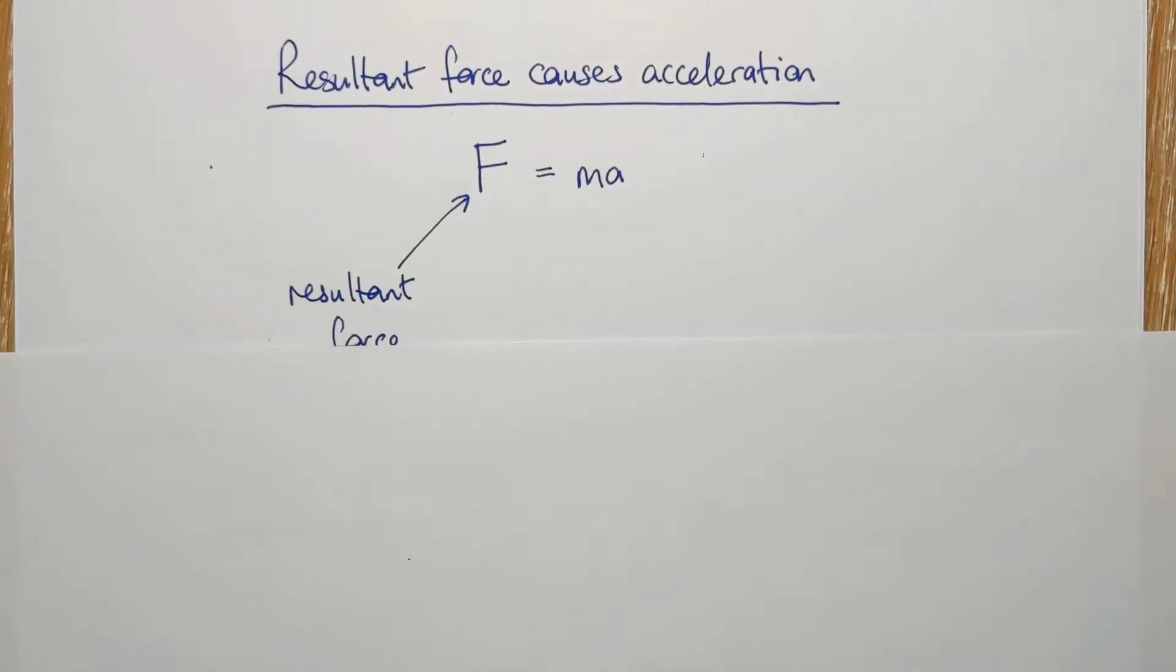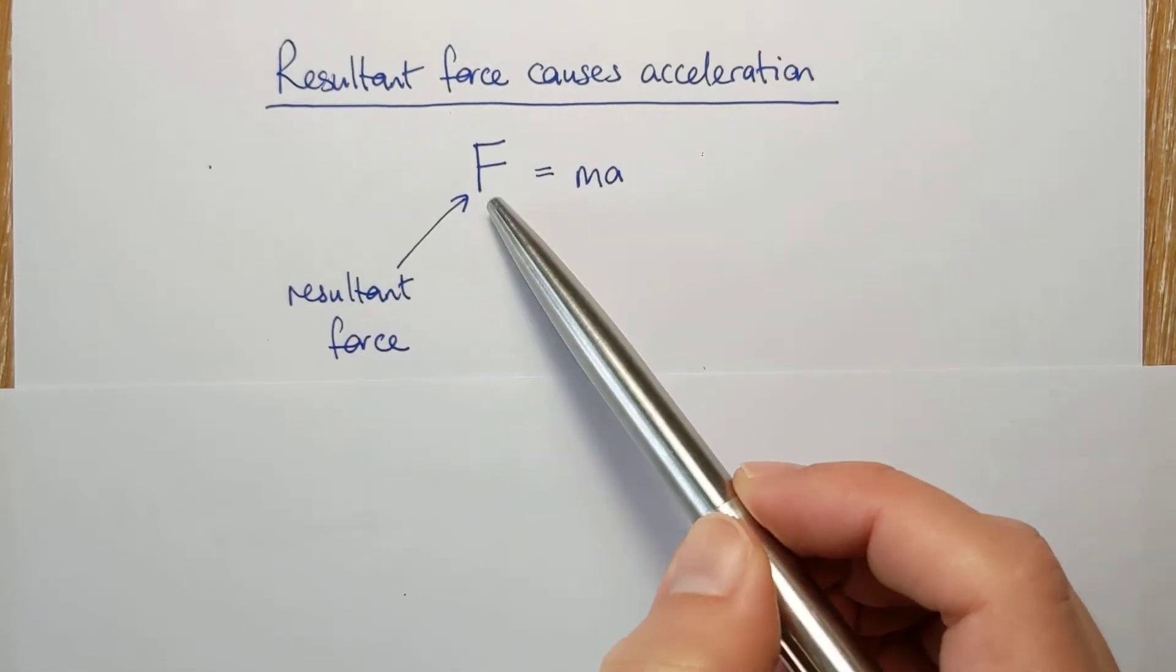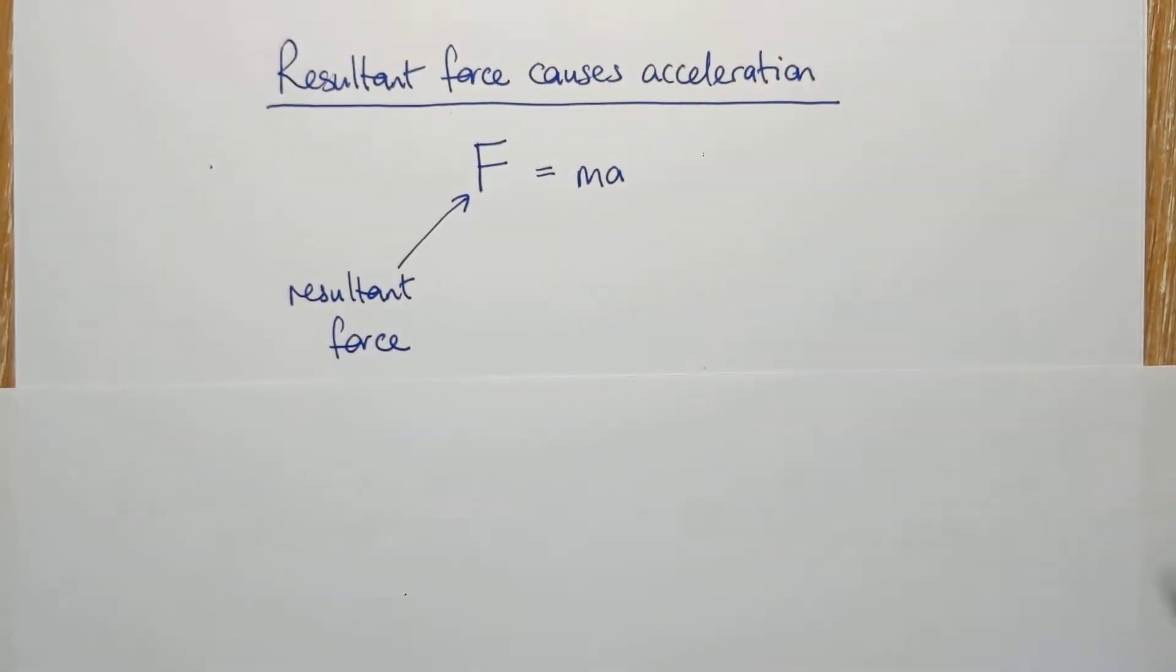The formula, which I know you'll be very familiar with, is this one, but just remember that you can't put any old force in there, it has to be resultant force. I think it's a shame it doesn't have its own symbol, because that would help it to be clearer.